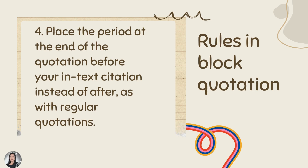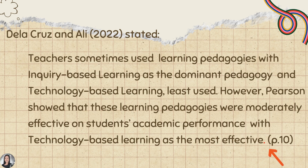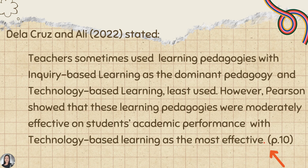Rule number 4: place the period at the end of the quotation before your in-text citation, instead of after, as with regular quotations. In our quotation, the period is after the word 'effective' and it is before our in-text citation — in parenthesis, P.10, meaning page 10. So our long quotation is taken from page 10 of our source, LaCruz and Ali.